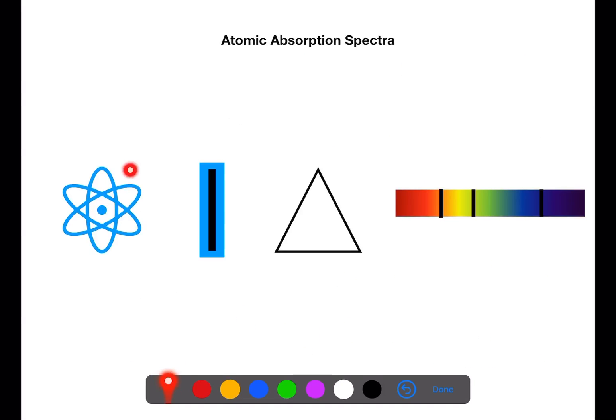In atomic absorption spectra the sample is first atomised. Electromagnetic radiation is then applied to the sample. This excites some of the electrons to higher energy levels. The rest of the light can then be passed through a slit and then a prism.